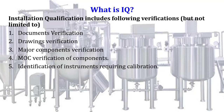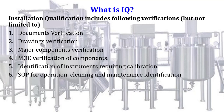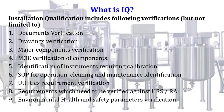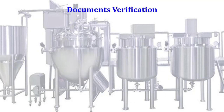Further verifications include: identification of instruments requiring calibration, SOPs for operation, cleaning and maintenance identification, utilities requirement verification, requirements which need to be verified against URS or risk assessment, and environmental health and safety parameters verification. All these nine points need to be verified during installation qualification. These are not limited — you can verify other parameters based on equipment requirements.